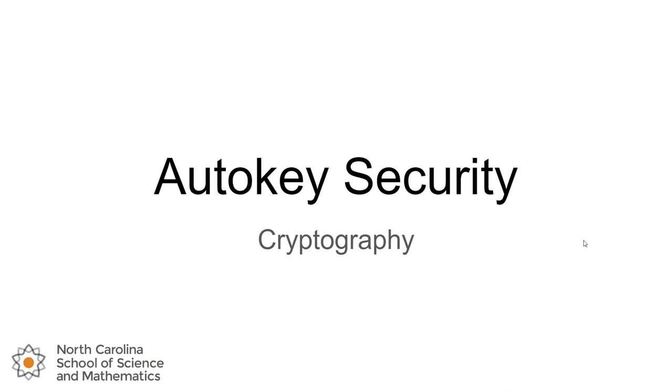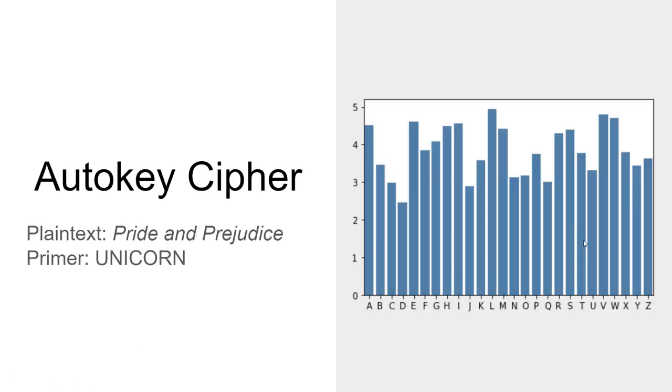Let's take a look at how it has an impact on security. Going back to our tried and true example text, I've taken Pride and Prejudice with the primer of unicorn and used the autokey cipher to create it as a ciphertext. And this is what the distribution of characters looks like. We can see that every single letter has a frequency between 2.5 and 5 percent, which is very different from what we've seen with Caesar or even our Vigenere cipher.